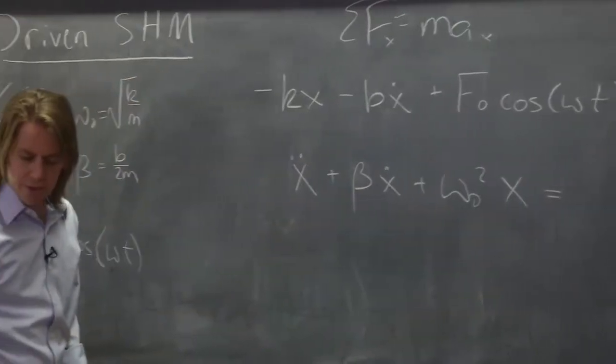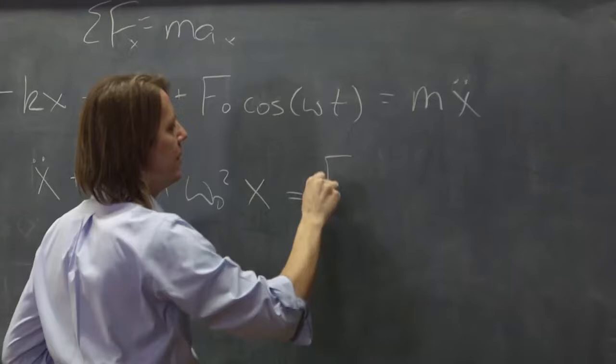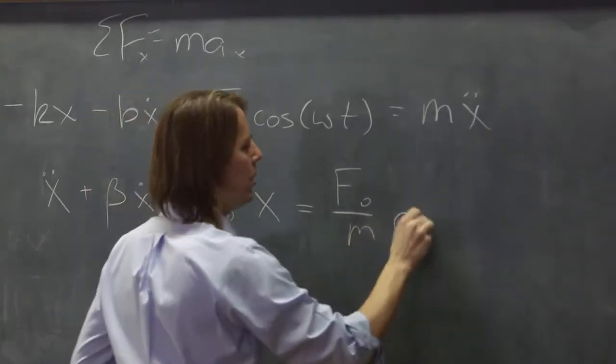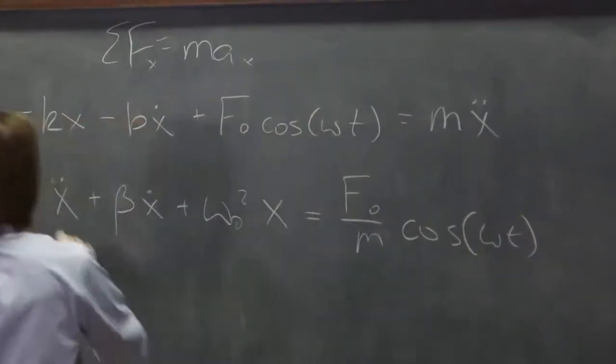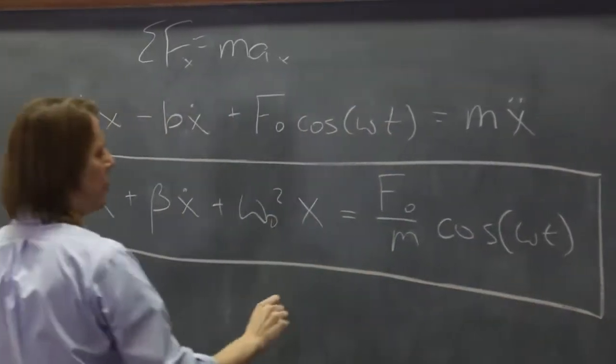And then we bring the f over m. Oh, it's already positive. It's over here. So f naught over m cosine omega t. So this is the driven equation of motion.